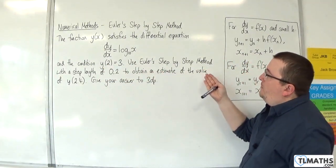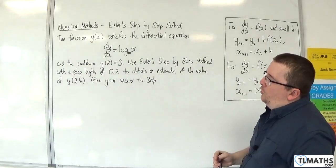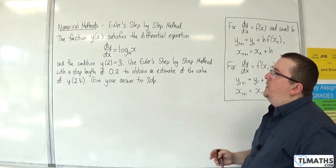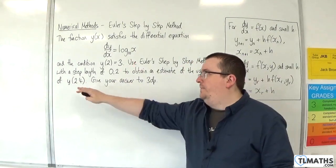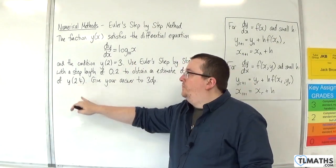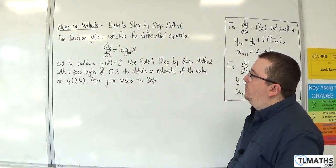Use Euler's step-by-step method with a step length of 0.2 to obtain an estimate of the value of y of 2.4. So we want to find y when x is 2.4. Give your answer to three decimal places.